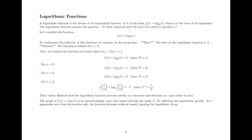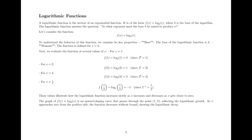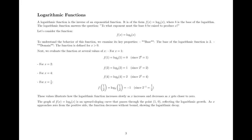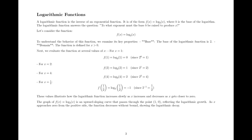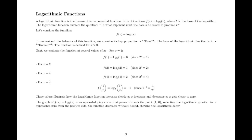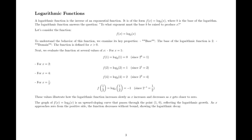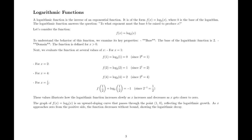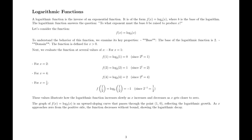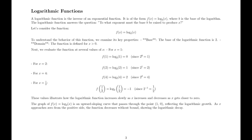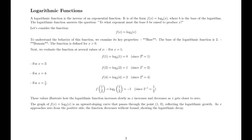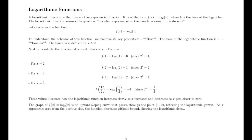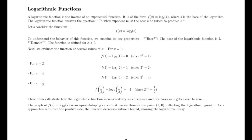The domain of the function is x > 0. Next, we evaluate the function at several values of x. For x = 1, f(1) = log₂(1) = 0, since 2⁰ = 1. For x = 2, f(2) = log₂(2) = 1, since 2¹ = 2. For x = 4, f(4) = log₂(4) = 2, since 2² = 4. For x = 1/2, f(1/2) = log₂(1/2) = -1, since 2⁻¹ = 1/2.